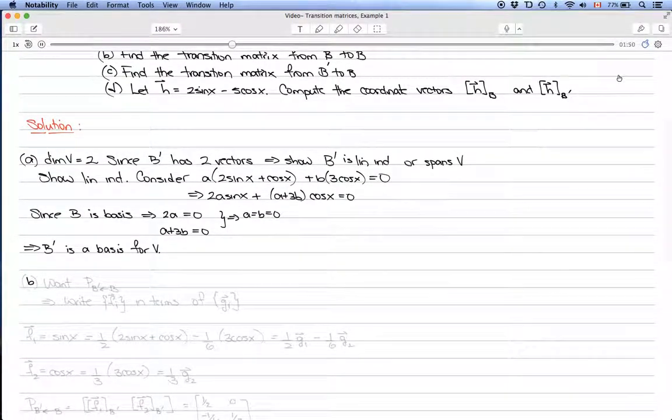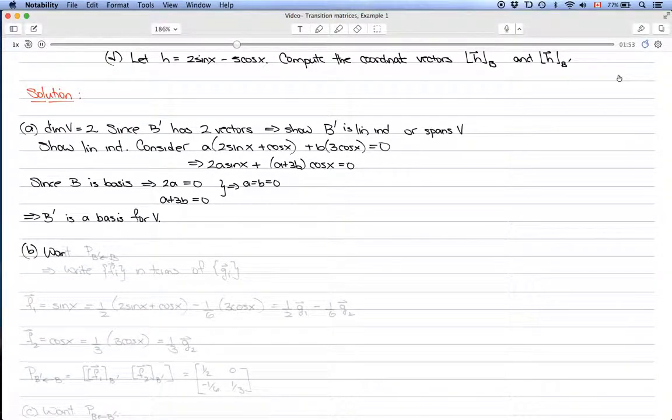In the second part of the problem, we want to find the transition matrix from B to B prime. This means that we want to write the old vectors, the f_i's, in terms of the g_i's.